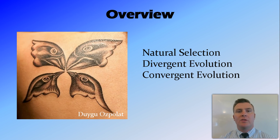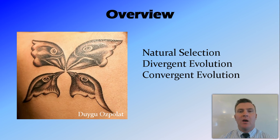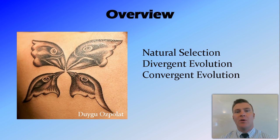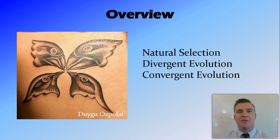In this video we've looked at natural selection as the process by which evolution occurs. We've looked at divergent evolution, where isolated populations of an organism evolve to have different characteristics. And we've looked at convergent evolution, where different organisms that live in the same environment evolve to have similar characteristics.